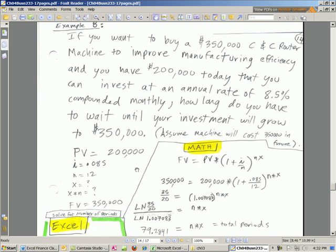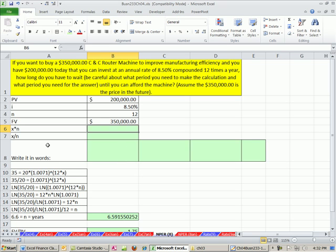In this video, we want to talk about solving for the number of periods. Total number of periods is years times number of compounding periods per year. We've been given this or calculated this from our years and number of compounding periods, but here we want to actually have all the other inputs and solve for this.